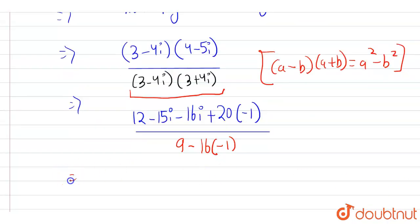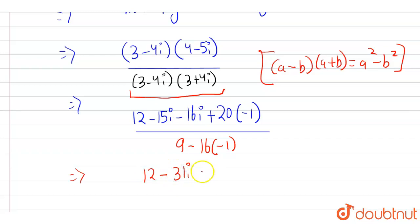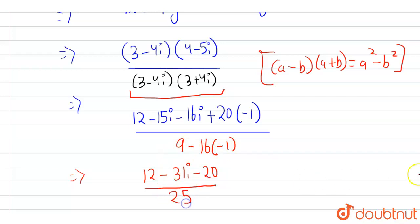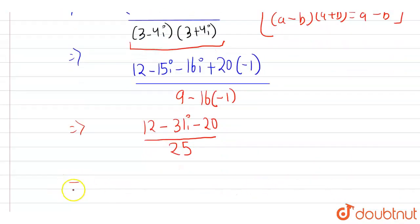Simplifying the numerator: 12 + (-15i) + (-16i) = -31i, and 20 × (-1) = -20. So the numerator is 12 - 20 - 31i = -8 - 31i. For the denominator: -16 × (-1) = 16, and 16 + 9 = 25.